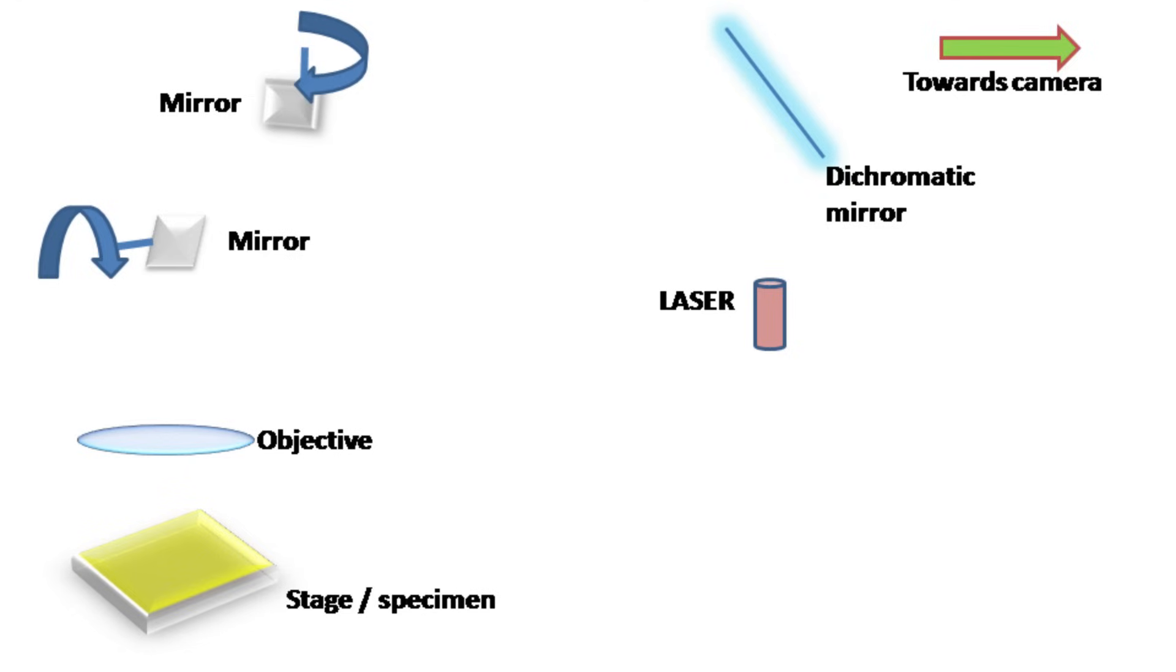Now let's see the working of the confocal microscope. Number one, laser is focused in a small region of the specimen. The fluorescent dye in the specimen gives fluorescence which is captured by the digital camera.